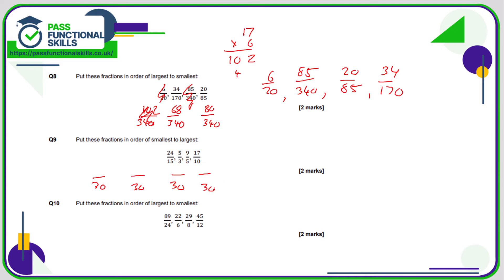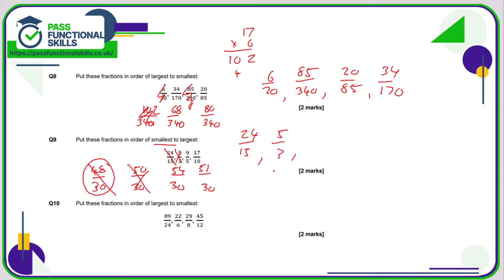10 times 3 is 30, so 17 times 3 is 51 — giving 51 thirtieths. Five times 6 is 30, so 9 times 6 is 54. Three times 10 is 30, so 5 times 10 is 50. And 15 doubled is 30, so double the top: 48. Now comparing numerators smallest first: 48 out of 30 is the smallest (which is 24 fifteenths), then 50 (five thirds), then 51 out of 30 (17 tenths), and finally 9 fifths.